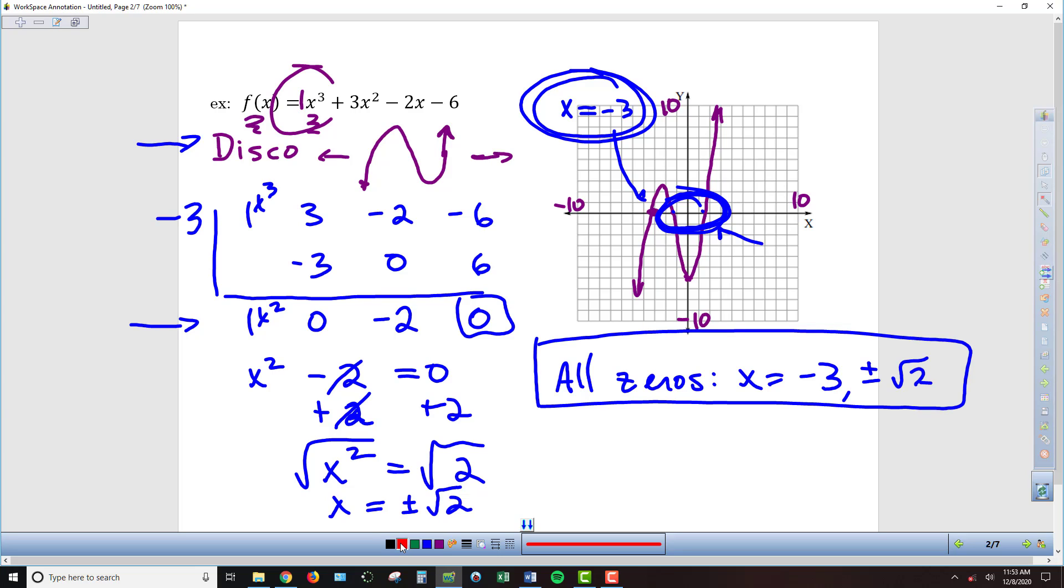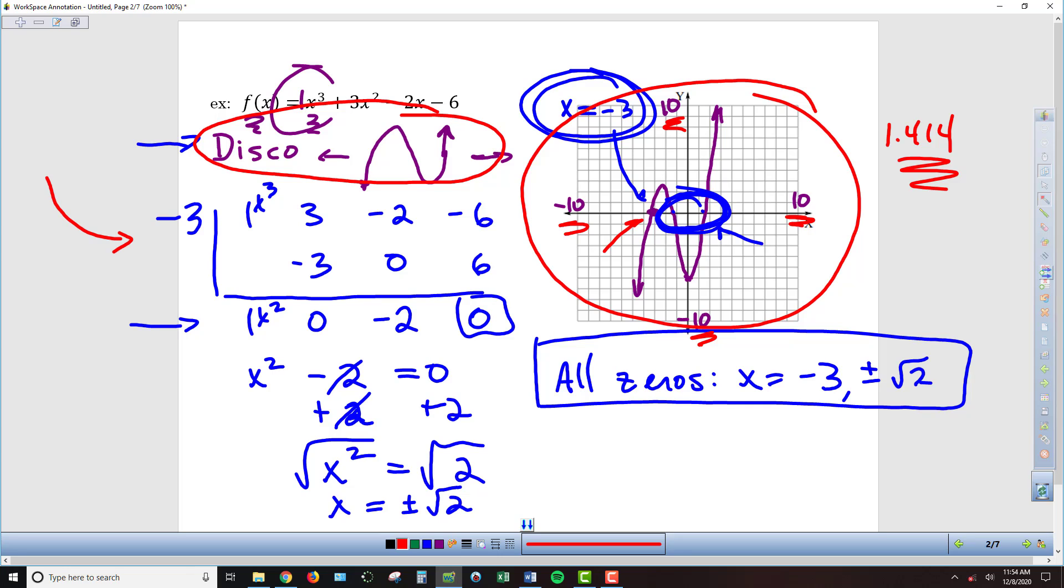So to review, we first generated an expectation as to what our graph should look like using that leading coefficient test. So because of the odd highest exponent, we knew it was disco. Because of the positive coefficient, we knew it would be up on the right and down on the left. Then we graphed using Desmos, and we sketched our graph here, interpreting what we got from the computer or from the app. Then labeling our axes carefully to make sure that we know what we're counting by, and then plotting some key points carefully to make sure we have an accurate sketch. Then we used the integer zero that we could observe using Desmos by just clicking on that spot right there. We've got negative 3, but we found that the other two zeros were these 1.414 values. So we knew that we had some sort of irrational zero, so we had to figure out a way to solve for that. And so the way we did that is we used our synthetic division with the integer zero that we had, and so that gave us a quadratic that we could then use to solve to find what those remaining irrational zeros were.